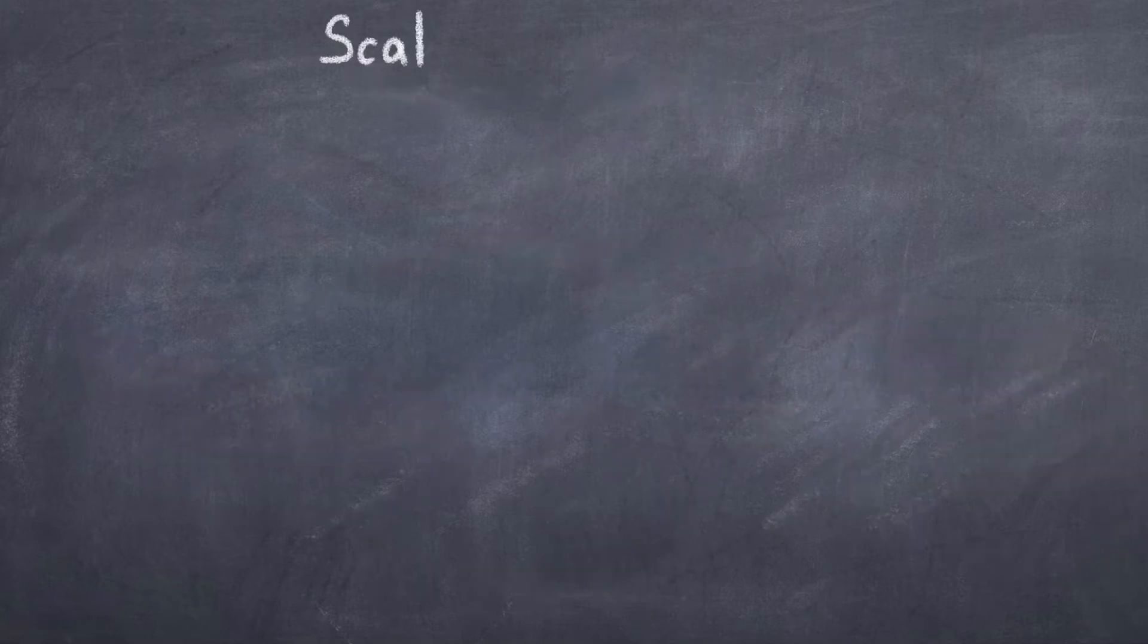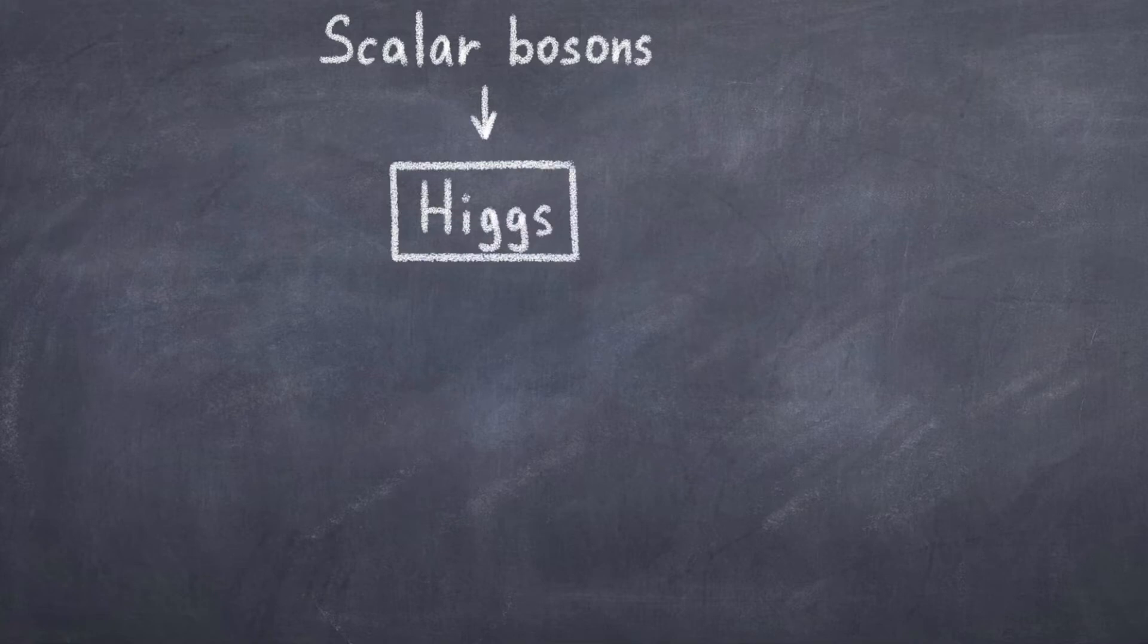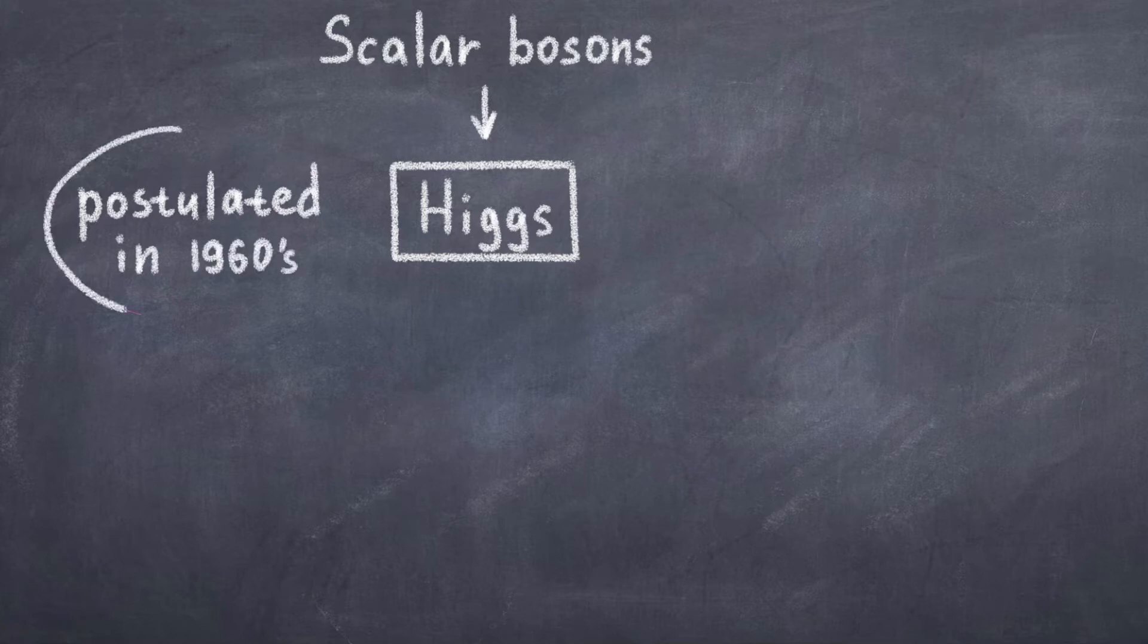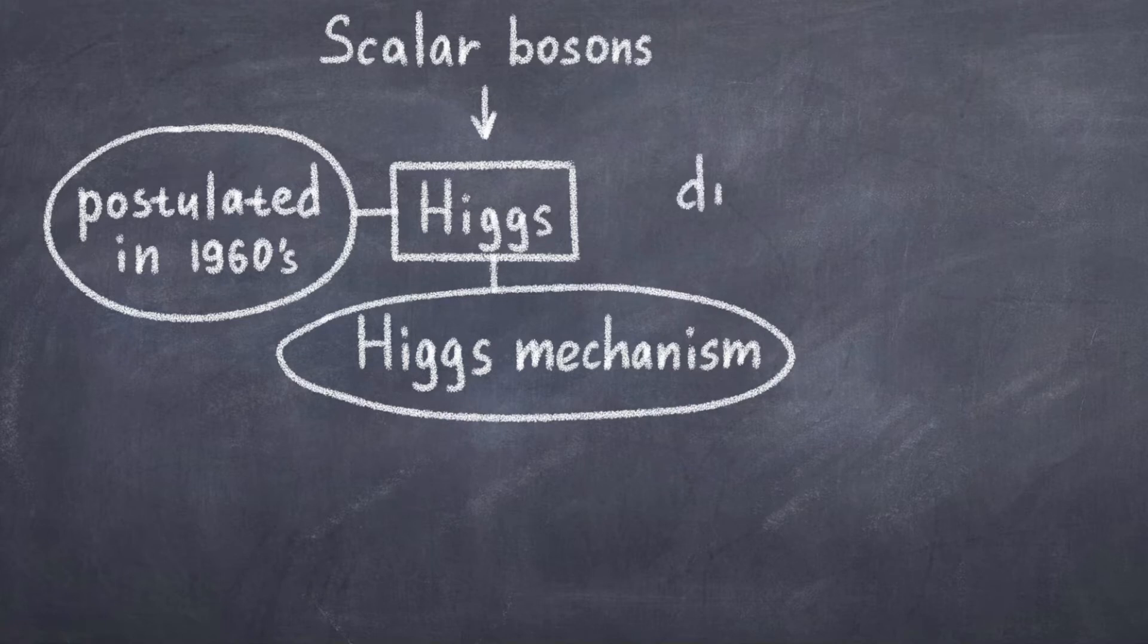We also have another boson which is not a vector boson. It is the famous scalar boson called the Higgs boson. The governing equation of the Higgs field is very similar to that of the Klein-Gordon equation since it is the scalar field. The Higgs particle was first postulated back in the 1960s to resolve a core problem in the development of the standard model. The Lagrangian of the standard model has a special symmetry called gauge invariance. In short, this symmetry doesn't allow you to write mass terms in the Lagrangian like we did with the scalar field theory in the introduction video.